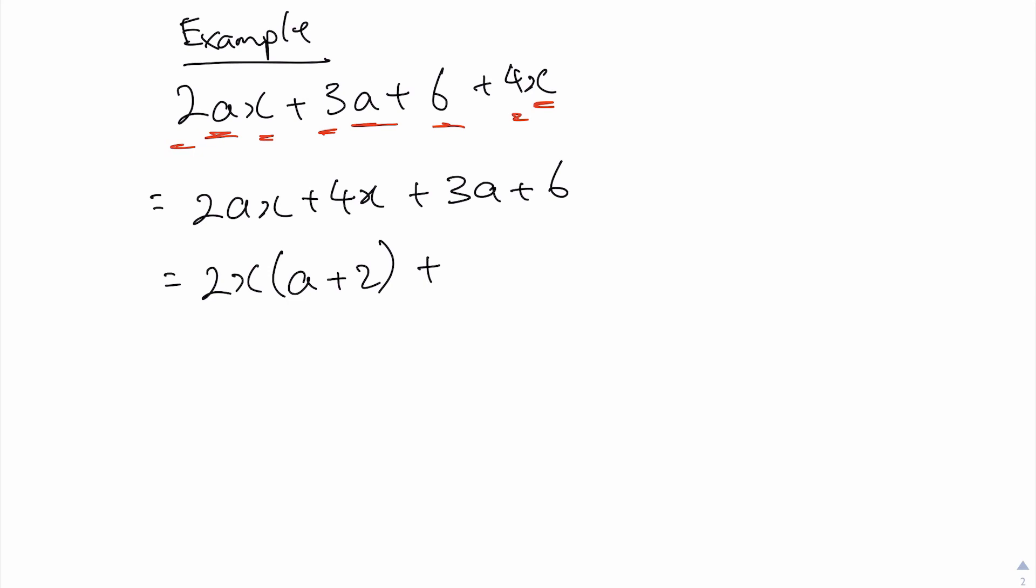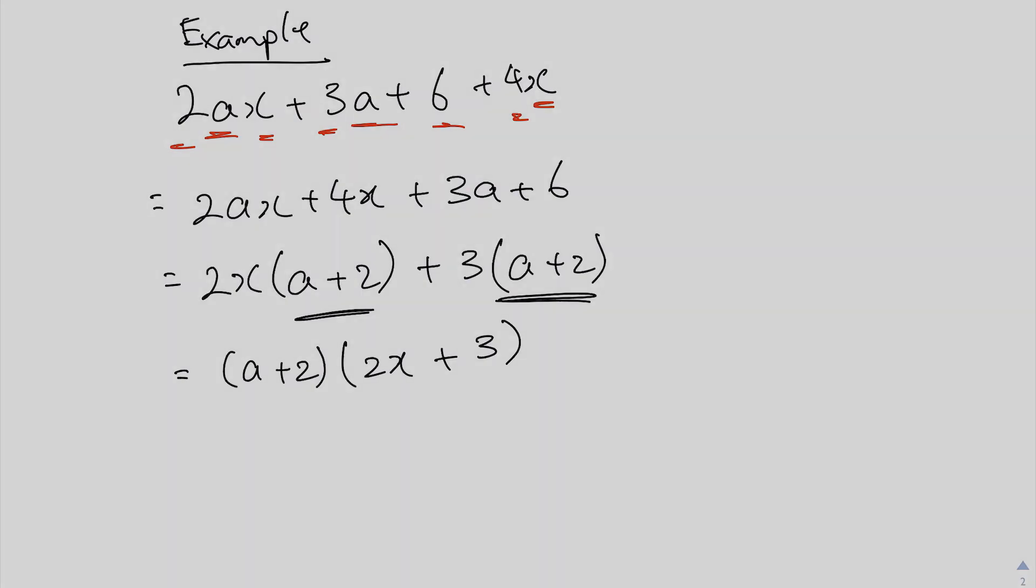And for the third and fourth term, the common factor is just a 3, and you are left with an a + 2. So now you can see that you are left with a common factor a + 2, and factorizing the a + 2, you are left with a 2x for the first term and a 3 for the second term. So that's it, you have factorized this expression into the simplest form.